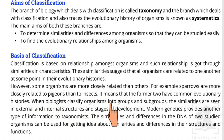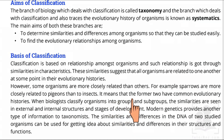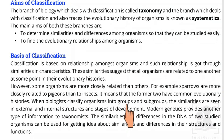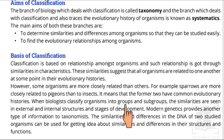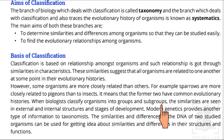When biologists classify organisms into groups and subgroups, they examine similarities in external and internal structures and stages of development. Modern genetics provides another type of information to taxonomists. The similarities and differences in the DNA of two studied organisms can be used for getting an idea about the similarities and differences in their structures and functions.